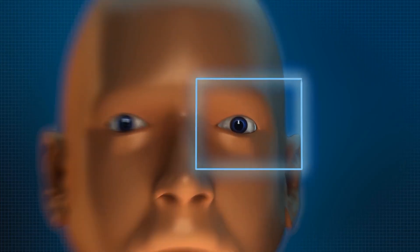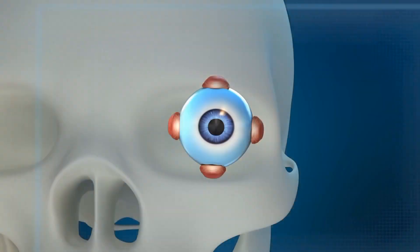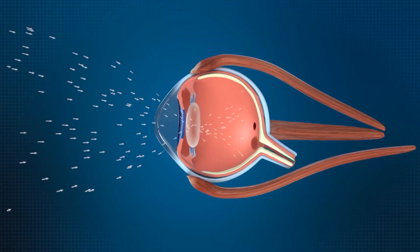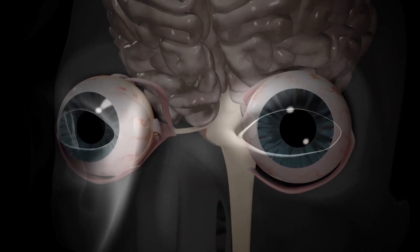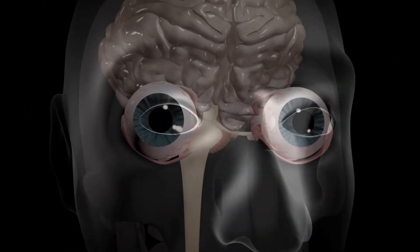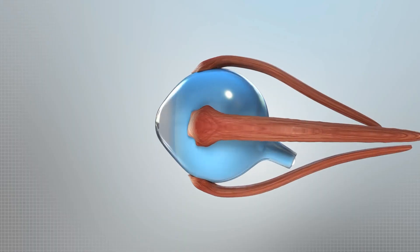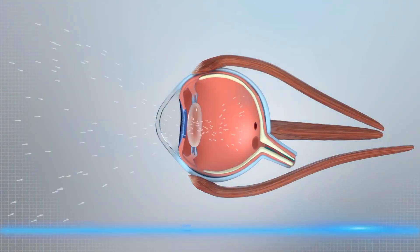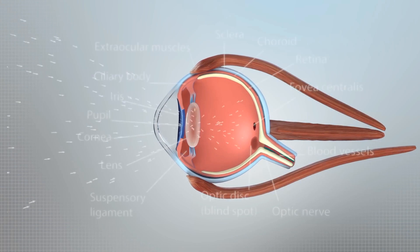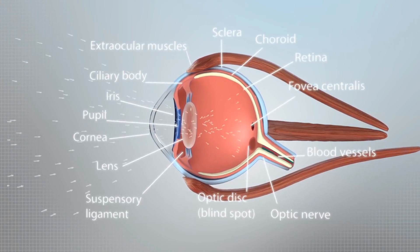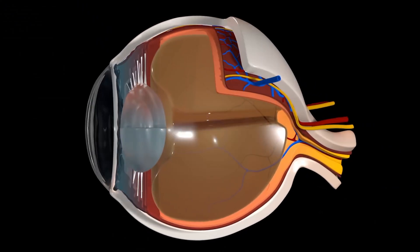The human eye is a specialized organ which is capable of receiving visual images. These visual images are then transmitted to the brain. If we look at a horizontal cross-section of a human eye, it shows us some major parts.